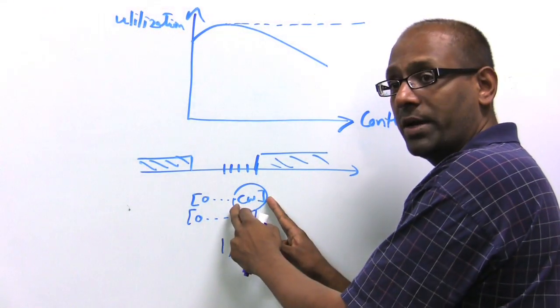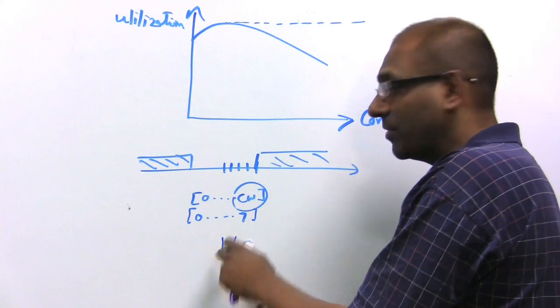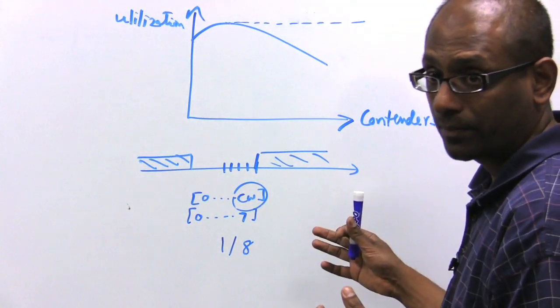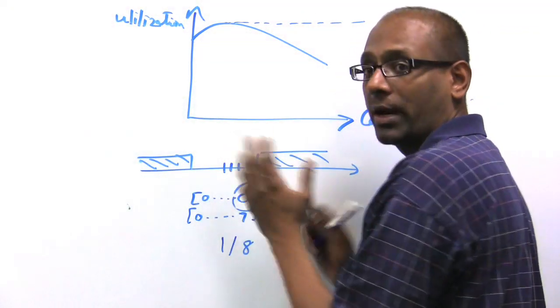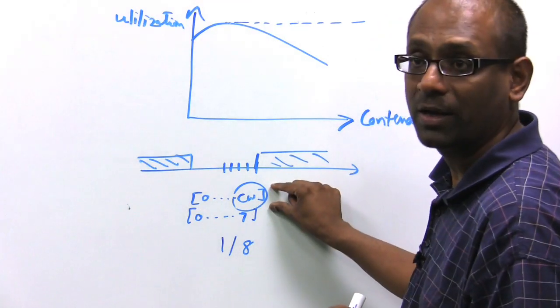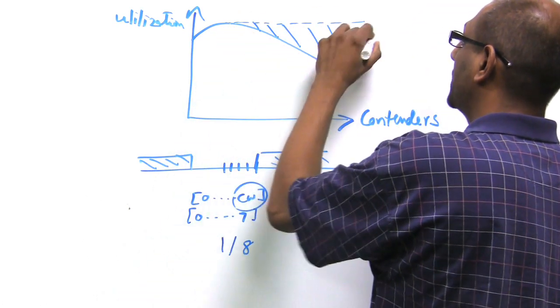So the larger the contention window, lower the probability of collision, but if there aren't multiple transmitters, then the longer the time you wait. So there is a tradeoff between waiting too long and colliding. And as the number of contenders starts to increase, it's very difficult to predict this value correctly. So all of this is really collision-based loss.